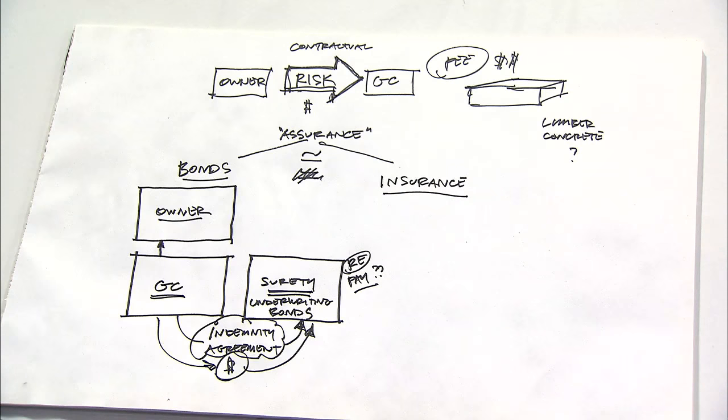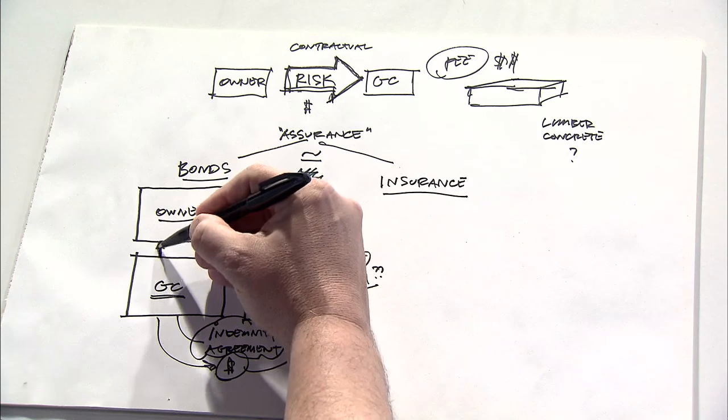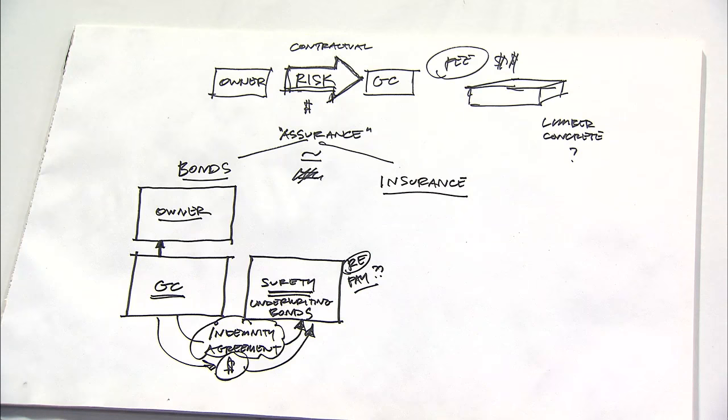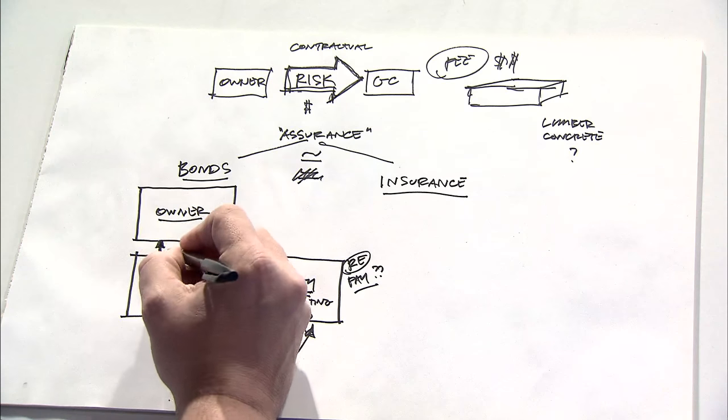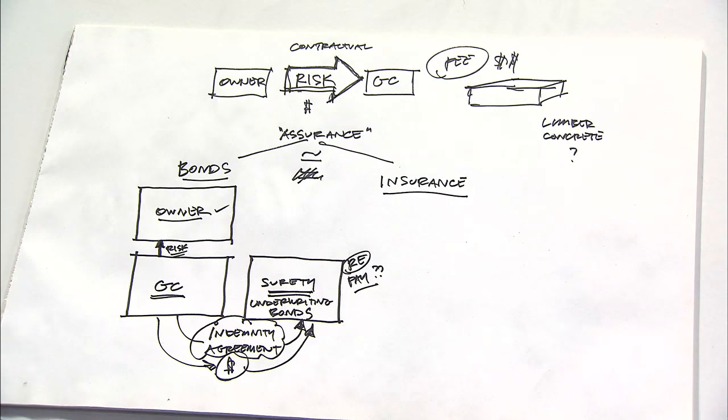And in that agreement, then the contractor agrees to provide a scope of work, that is, to provide a building or some type of construction, in exchange for a fee. Well, there's a certain amount of risk that's associated with going into that arrangement.